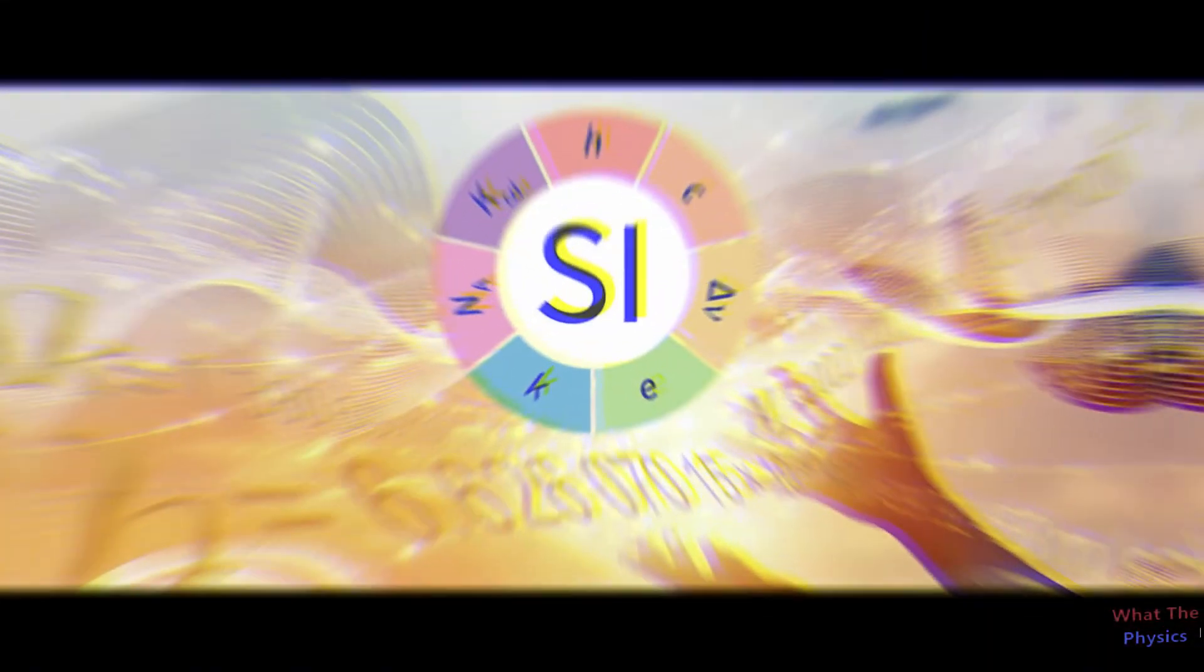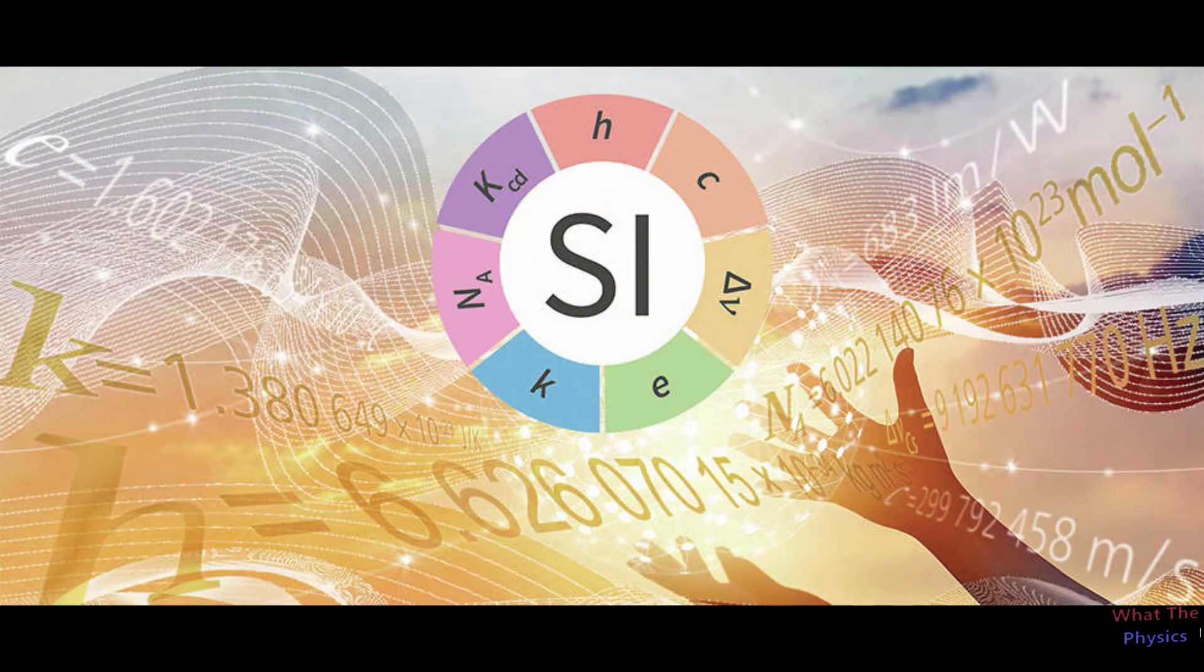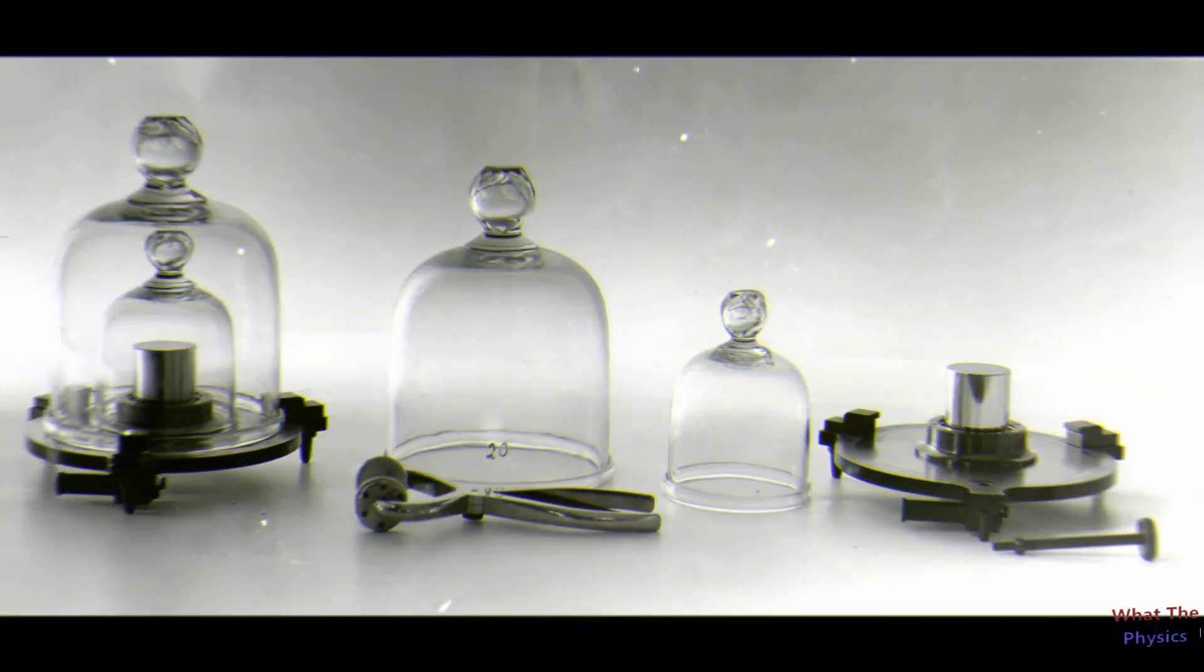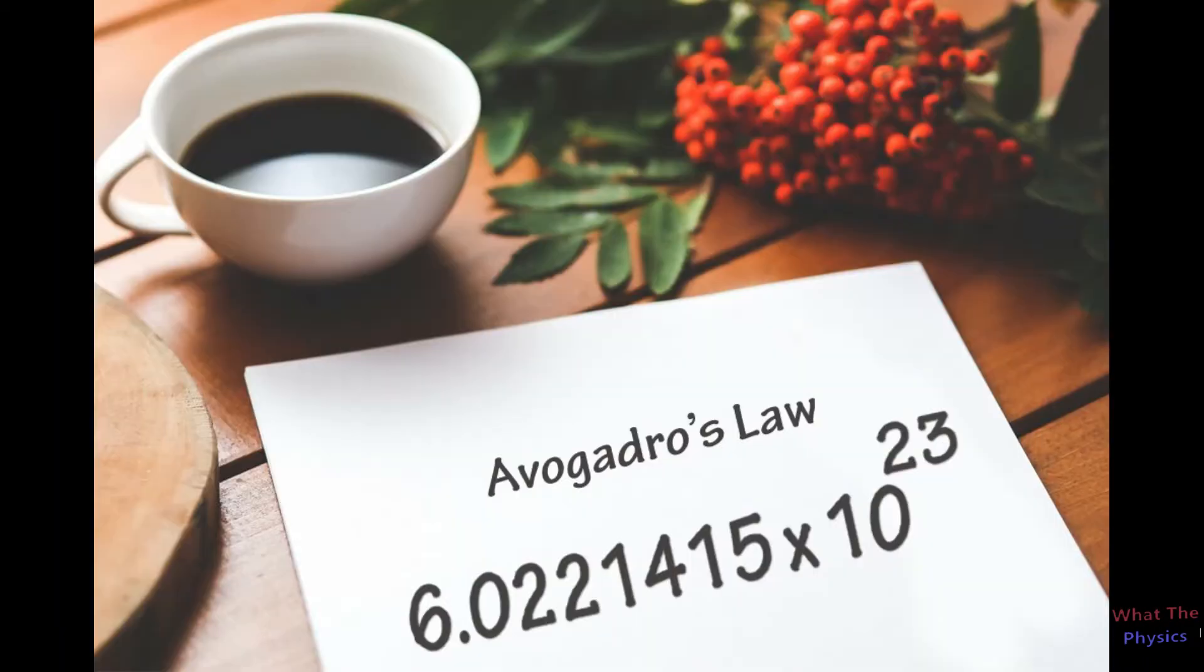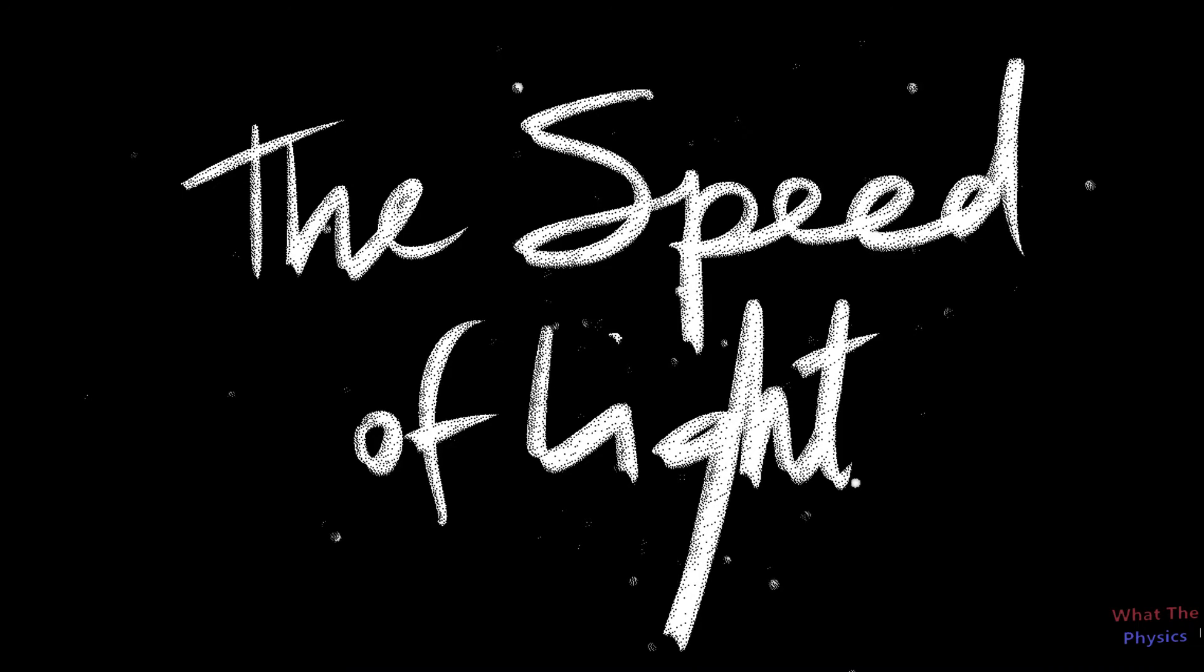So scientists decided to define the kilogram on the basis of unchangeable quantities of nature, like Planck's constant, Avogadro's number, Boltzmann constant, and speed of light.